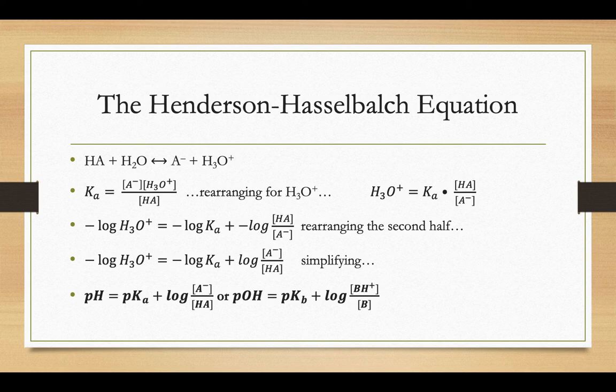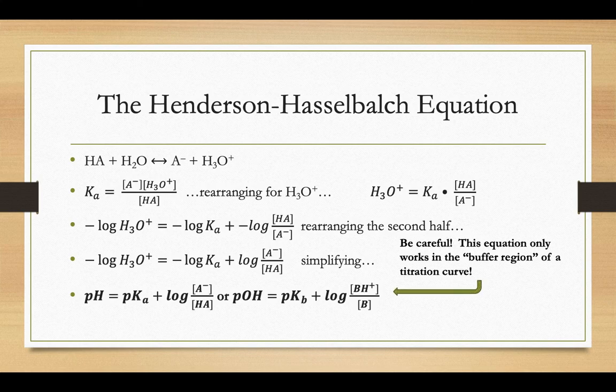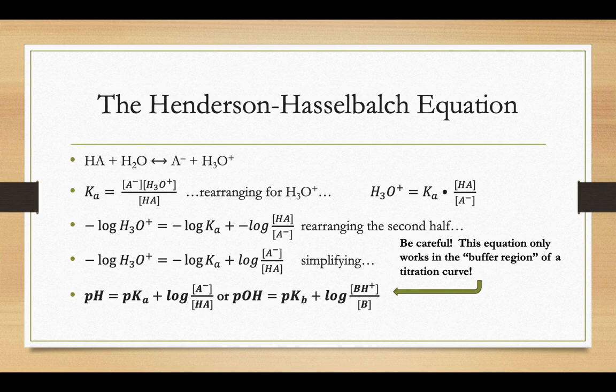Now, in order to use the Henderson-Hasselbalch equation, you need both A- and HA available, or both BH+ and B available. If you only have one of those two chemicals available, then the equation isn't going to work. For that reason, the equation only works in the buffer region of the titration curve, because that's when you have some excess HA left over, for example, and some A- that has formed. You need both chemicals there.